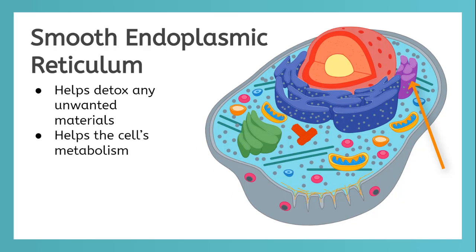The first one we will talk about is the small purple one, called the smooth endoplasmic reticulum. It is used to metabolize lipids in the cell and help the cell detox from unwanted materials.